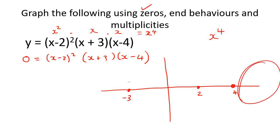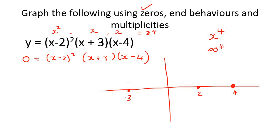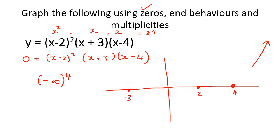To work out what happens on the right-hand side, think of a very large x value — infinity. Infinity to the power of 4 is a very large positive number, so the end behavior goes up. On the left-hand side, we use negative infinity. Negative infinity to the power of 4 stays positive because negative times negative times negative times negative makes a positive. So on this side, it's also going to go up.